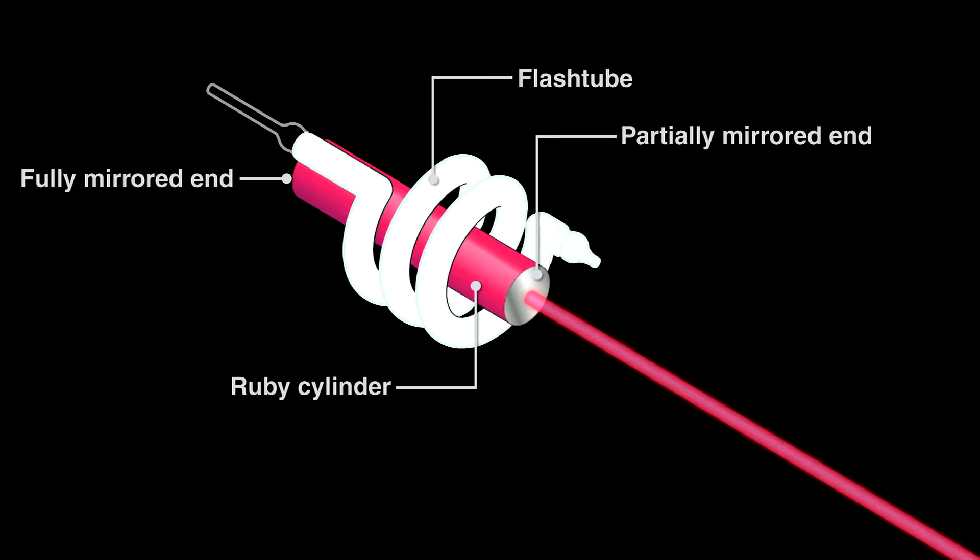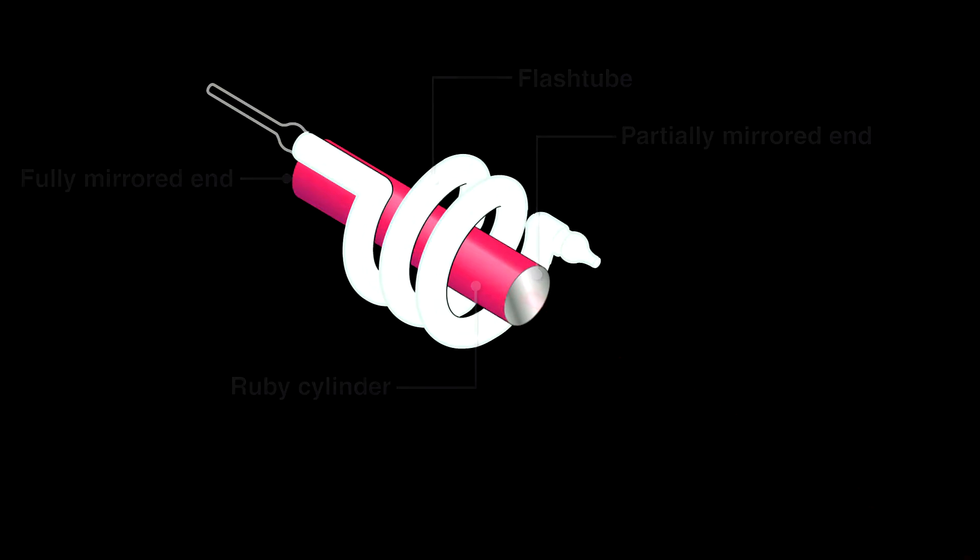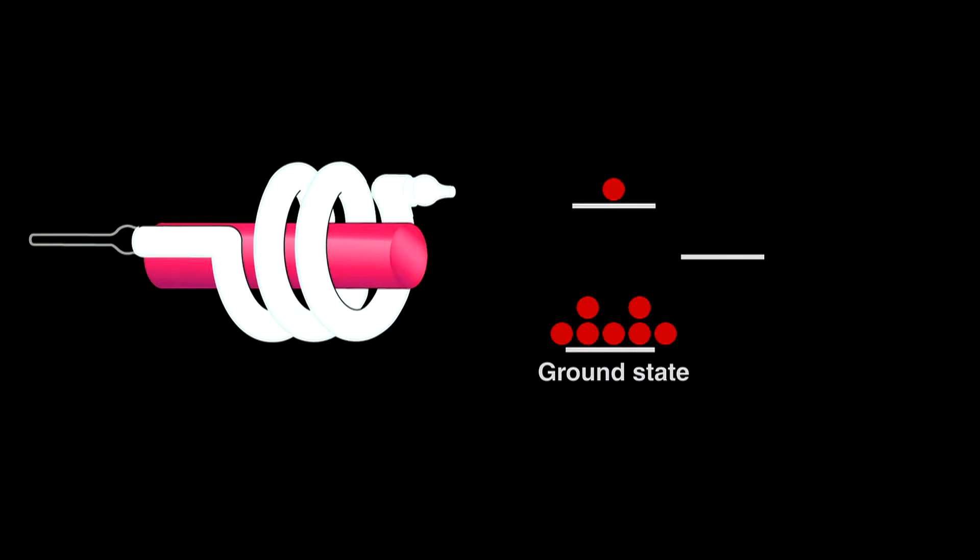To see how it works, let's look at what happens with a weaker lamp. A flash would promote a few electrons from the ground state to an excited state. They'd lose a bit of energy, fall to a lower energy state without emitting light, and then drop from there to the ground state giving off a burst of light.